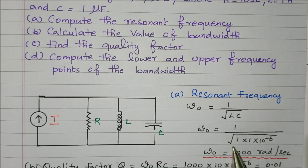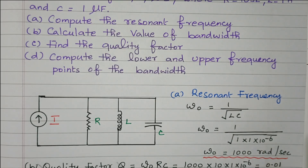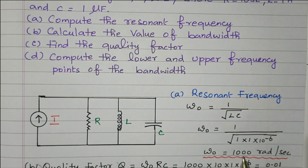So omega naught equals 1 divided by — L is 1 Henry and C is 1 micro Farad, which is 1 times 10 to the power minus 6. Simplifying, we get 1000 radian per second. So the resonant frequency is 1000 radian per second.